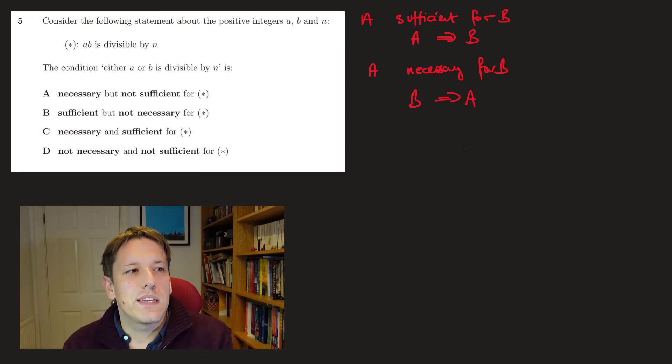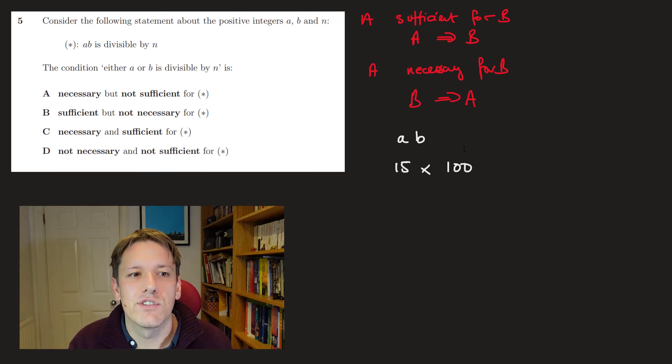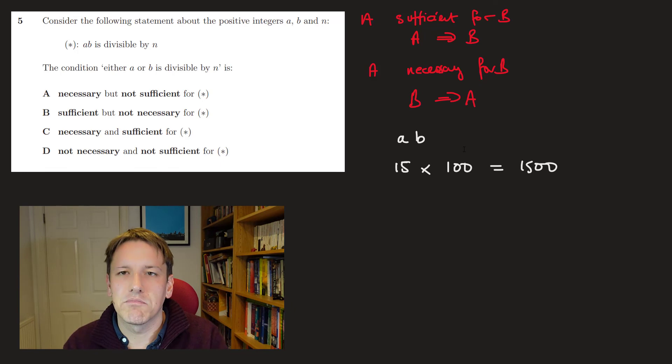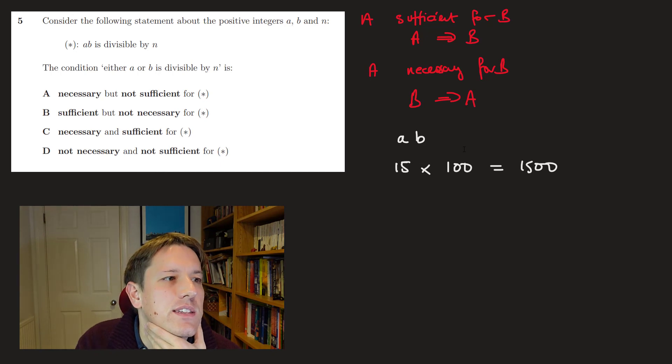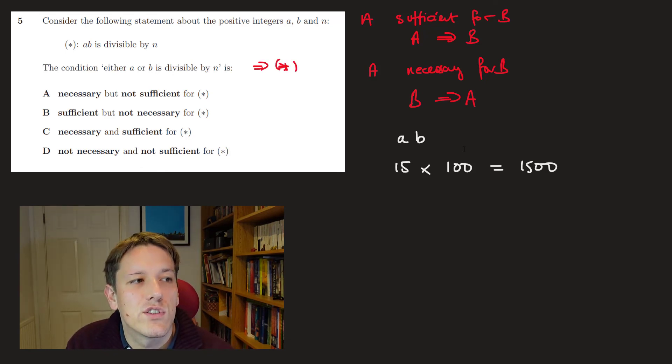So if either a or b is divisible by n, does that mean that a times b is divisible by n? Well, yes, it does. Because if a is divisible by n, then a times b must also be divisible by n, or if b is divisible by n, then a times b would also just automatically be divisible by n. We know that. If I take a number like 15 that's got 3 as a factor, and I multiply it by 100, then 1500 is also going to have 3 as a factor. Pretty clear cut, I don't think I have to say anything more about that. So that means that this condition, when this condition is true, then it implies the condition star. So that means it's sufficient for b.